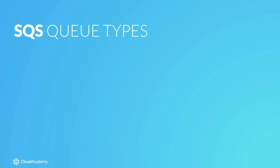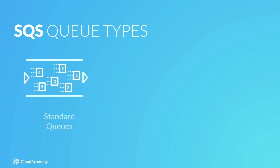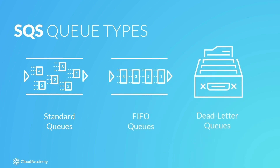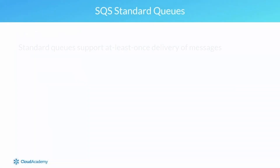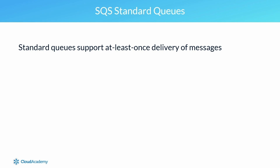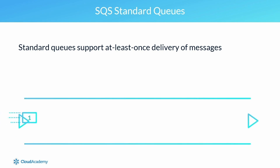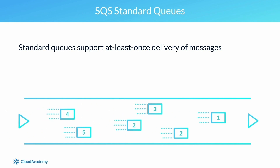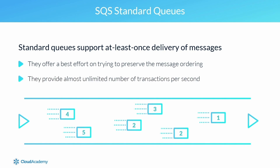There are different types of queues: standard queues, first-in-first-out queues, and dead letter queues. Standard queues, which are the default queue type upon configuration, support at-least-once delivery of messages. This means a message might actually be delivered more than once, which is largely due to the highly distributed volume of SQS servers, causing messages to appear out of their original delivery order. As a result, the standard queue will only offer a best effort on trying to preserve message ordering. If message ordering is critical to your solution, then standard queues might not be the right choice for you.